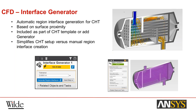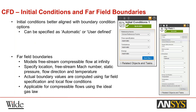Within CFD, one of the very useful new changes is automatic region interface generation for conjugate heat transfer. The previous version had good interface generators for fluid structure interaction, but not for CFD and conjugate heat transfer. Specifying multiple phase interfaces — such as fluid-fluid interfaces — by hand is now automated and the tool is very effective. There's also better specification for initial conditions, including an automatic specification using boundary conditions to specify initial conditions in a simplistic way, similar to how Fluent does it. You can also set up far-field boundary conditions specifically for compressible flow simulations using ideal gas law.